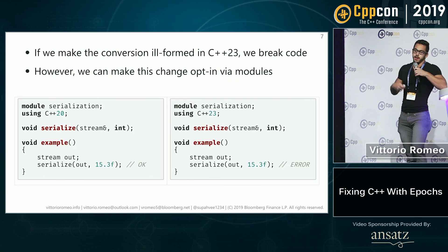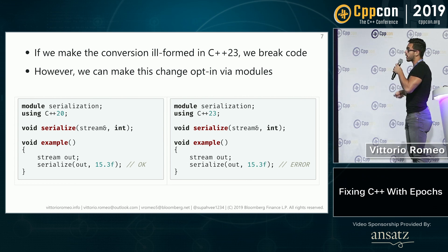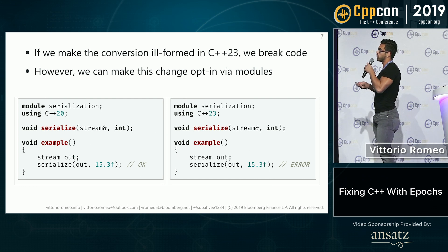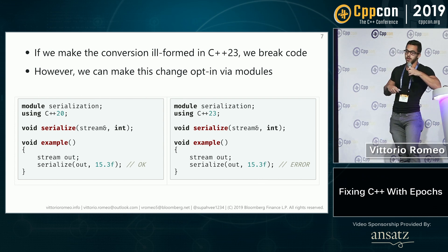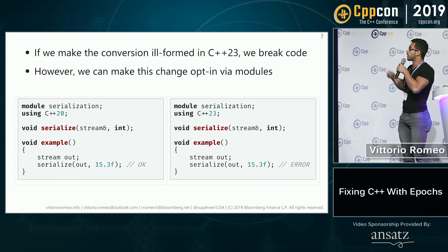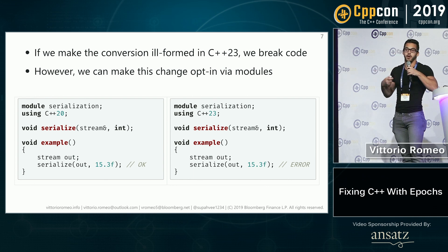Here's what I propose. In C++23, if we try to make the conversion ill-formed for all the code in existence, obviously we're going to break everybody and nobody will use 23. However, we can make this change opt-in via modules. Imagine at the beginning of every module you decide what version of C++ you want to use. Starting from 23, you can write a module which targets 20 or targets 23. In 23, we decide to make this conversion ill-formed, so any module that has 'using 23' in it will have an error when you are trying to call serialize. Now both of these modules can live together, and it's up to you to decide which to choose. This also allows you to slowly migrate in a gentle way from an older code base to a new one.